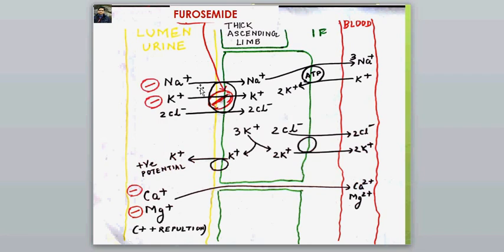By blocking the sodium-potassium-chloride cotransporter, there is no absorption of sodium, no absorption of potassium, and no absorption of chloride. With no potassium accumulation inside the cell, there is no expulsion of potassium into the lumen, so no positive potential is created on the lumen. Without that positive potential, no repulsive forces are generated, and therefore calcium and magnesium are not absorbed — they remain in the lumen and are not taken up into the blood.